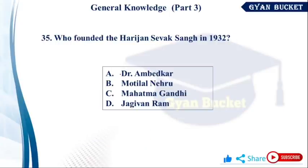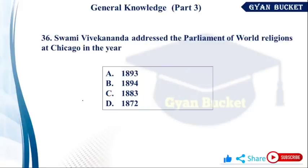Who founded the Harijan Sevak Sangh in 1932? Harijan Sevak Sangh in 1932 was founded by Mahatma Gandhi. Answer: Mahatma Gandhi.